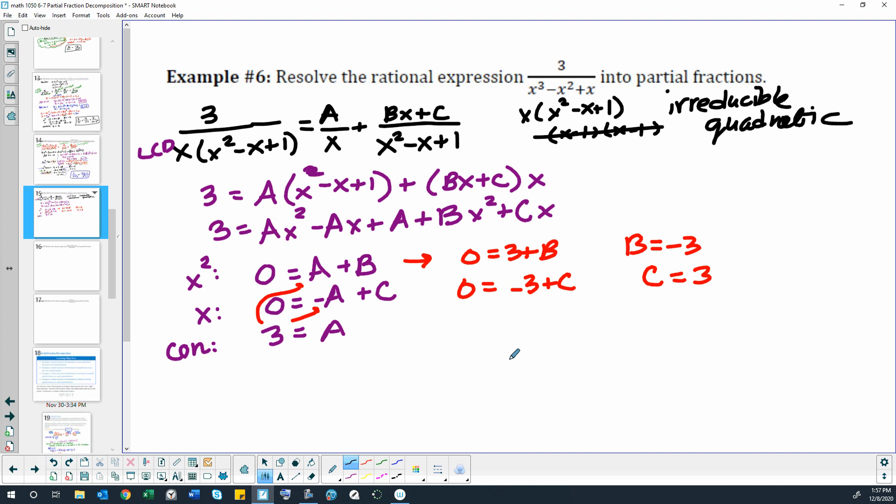Which gives us a final answer of 3 over x plus negative 3x plus 3 over x squared minus x plus 1. Thank you.